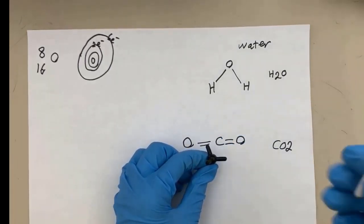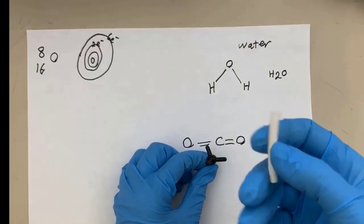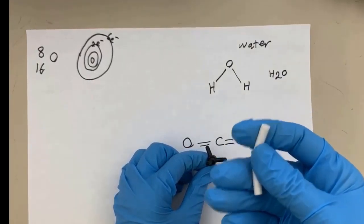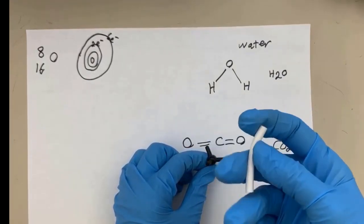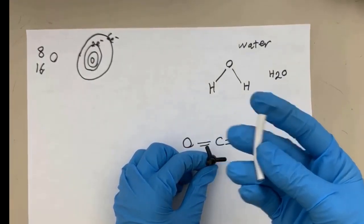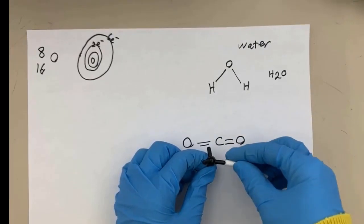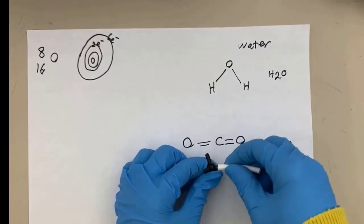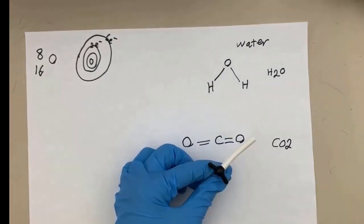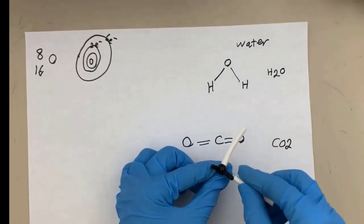Your kit should have something that is more flexible for the linkage — use that one for making the double covalent bond.